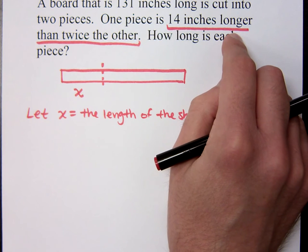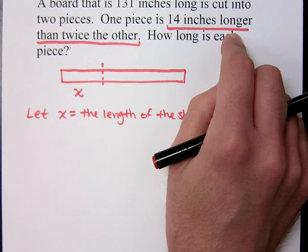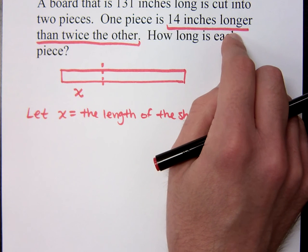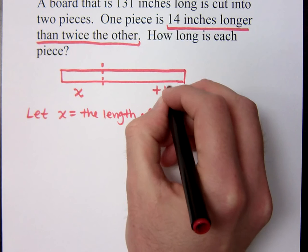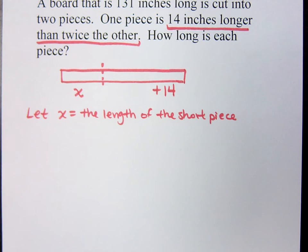When you say longer than, that's the same as the phrase we had the other day, more than, right? So it's 14 inches more than. That means I'm doing addition of 14 at the end. What am I adding 14 to? So it would be x plus, I'm sorry, x plus x plus 14. Hold on. 2x plus 14.